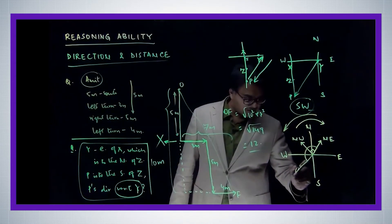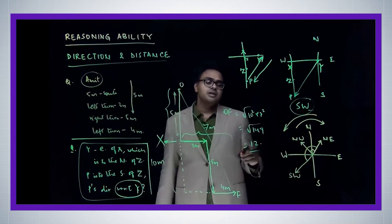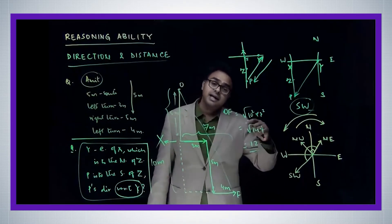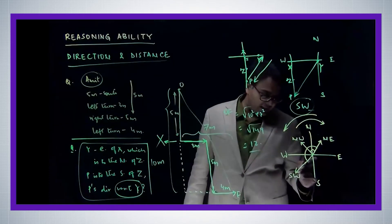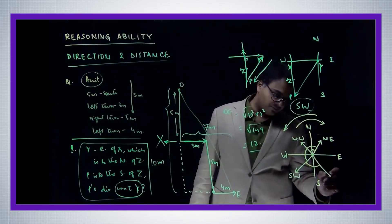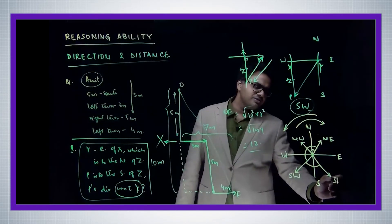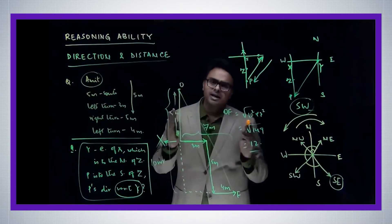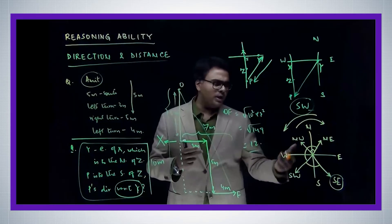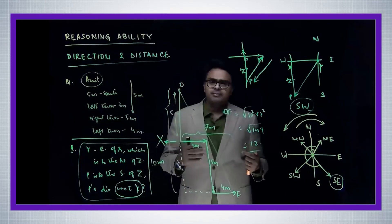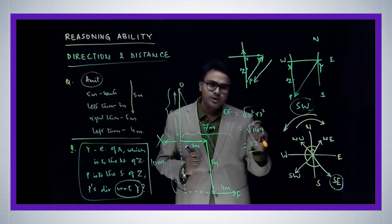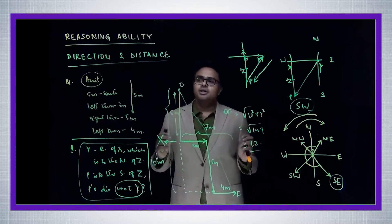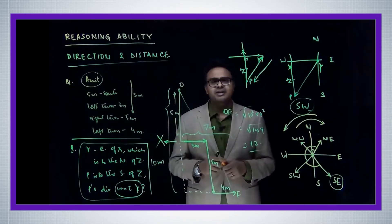After reaching southwest, the man turns 90 degrees further in the same anti-clockwise direction, which brings him to face southeast. So the final direction is southeast. These questions are very easy if you plot the diagram as soon as you start reading the question. If you do this, there is no way you can go wrong in this chapter.